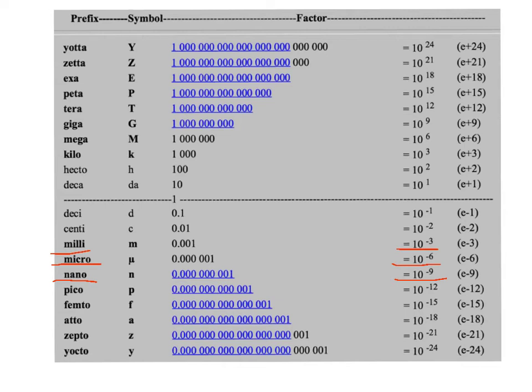Pico is the next smallest, and less creatively, Pico is simply Italian for small. It stands for 10 to the minus 12 of the original quantity, or 1 million millionth. So it appears that what the Greeks considered to be small was in fact 1 million times bigger than what the Italians thought was small. Think of the implications.